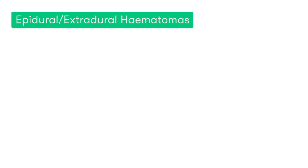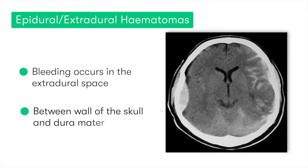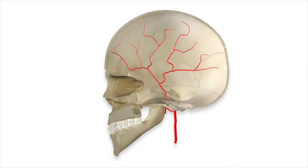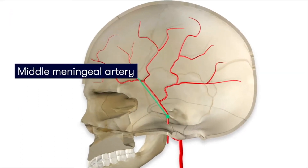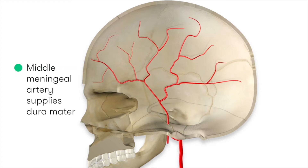Epidural or extradural hematomas, as the name suggests, is when bleeding and hematoma formation occurs in the extradural space, between the wall of the skull and the dura mater. This most commonly occurs as a result of bleeding from the middle meningeal artery, which is a branch of the external carotid artery. The middle meningeal artery travels along the inner surface of the skull and acts as the blood supply to the dura mater.